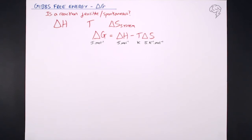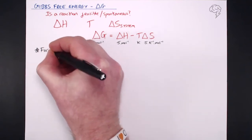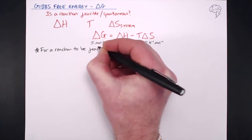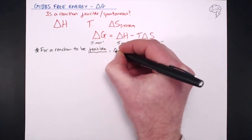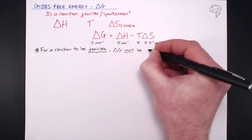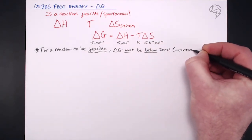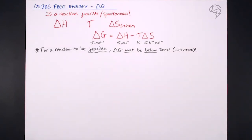Notice there are no kilojoules here — it's all joules, and you need to convert those units before you plug them into this equation. Once we plug some numbers in, what a question is going to want to know is: is the reaction feasible? For a reaction to be feasible, delta G must be below zero — negative. If it is, the reaction is feasible; if not, it's not feasible.